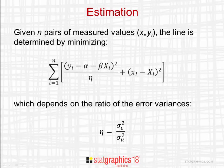Given n pairs of measured values, the line is determined by minimizing the quantity shown here. It involves the sum of squared deviations of Y about the line and X about the line.